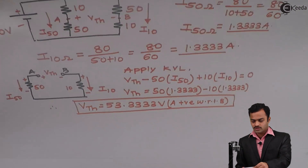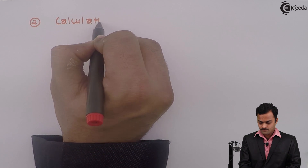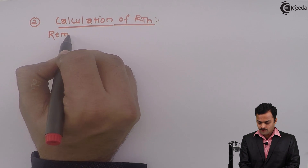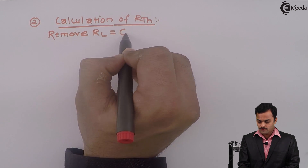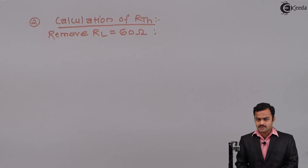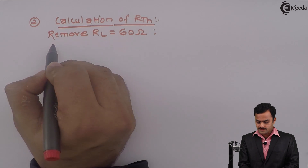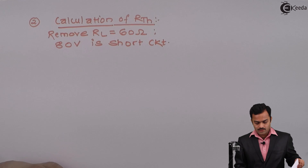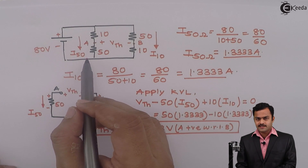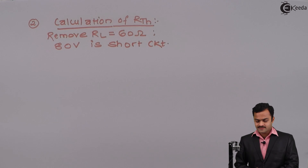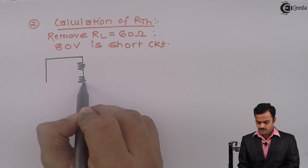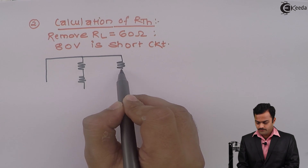Step number two: calculation of Rth. For Rth, we remove RL (60 ohm). All voltage sources are short-circuited and all current sources are open-circuited. In this case we have only one voltage source, 80 volts, so it is short-circuited. The redrawn circuit now has four resistances: 10, 50, 50, and 10 ohm, with the 80 volt source replaced by a wire.